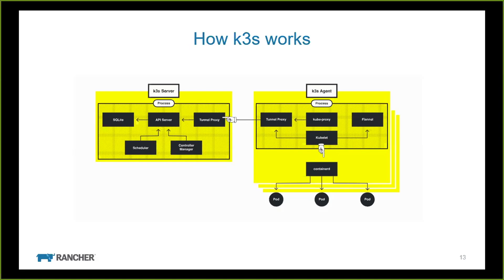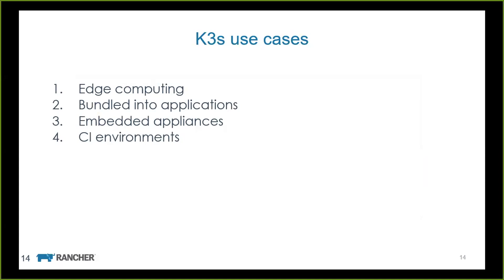We talked a lot about edge use cases, and edge is the core business reason why we're doing this — we see real demand for that. But K3S, I think, has so much more potential. There's a lot more you can do if you just have this really simple, easy-to-run Kubernetes. We realized it actually ends up being a really nice replacement for Minikube — if we put a little bit of UX around it, it's smaller, uses less CPU, and it's nicer on your laptop. We've also started heavily using it internally for CI environments — anytime we're running CI and need to launch Kubernetes and run some tests, we swapped that all out for K3S. It's not just for edge and ARM.